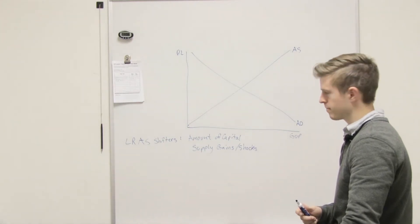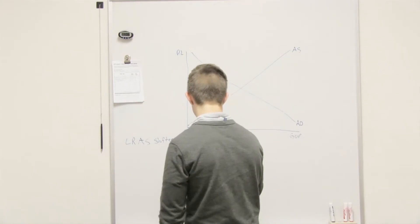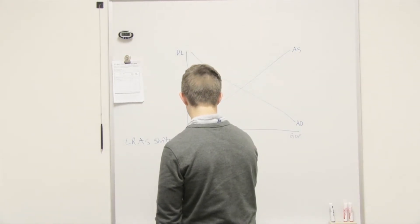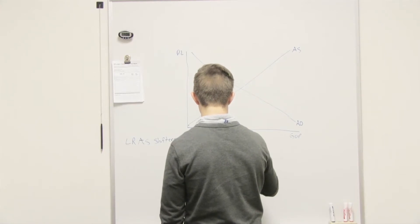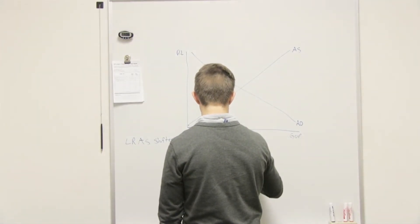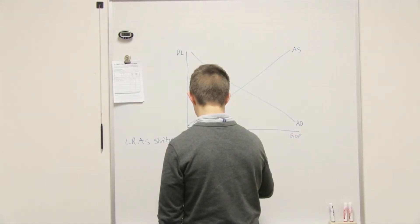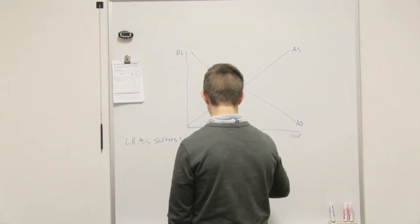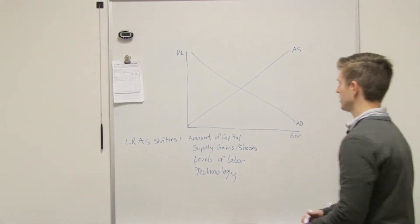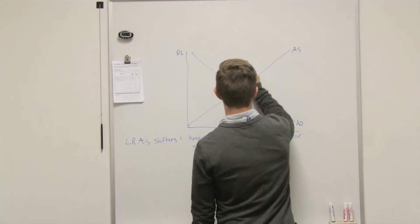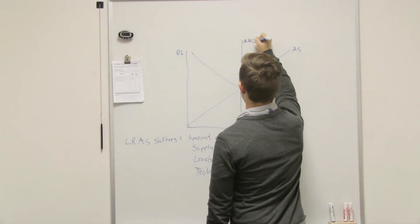Long run aggregate supply shifters. Okay, so I've got technology, levels of labor, levels of capital. That's right. Levels of capital. Capital. Yeah, levels of labor. That was the other one I was thinking. Technology. Which also kind of goes into capital as well. So, I mean, these things are long run shifters. So here's our long run.